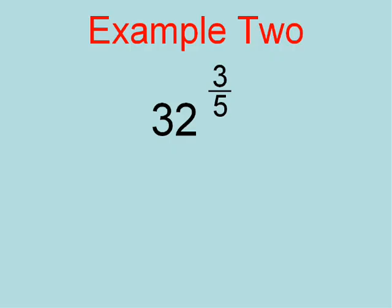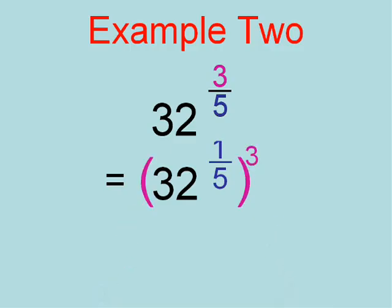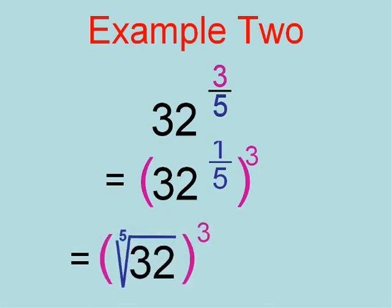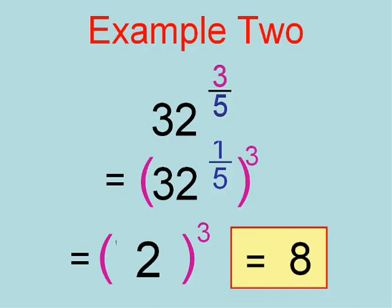I promise this one's going to come out even — I'm just trying to get you to remember the rules. Once again, the trick is to treat each one separately. We're going to have 32 to the one-fifth power — do that first, get an answer, and then raise it to the third power. Thirty-two to the one-fifth is the fifth root of thirty-two, which is 2, because 2 times 2 times 2 times 2 times 2 equals thirty-two. Then we take 2, raise it to the third, and you get 8.